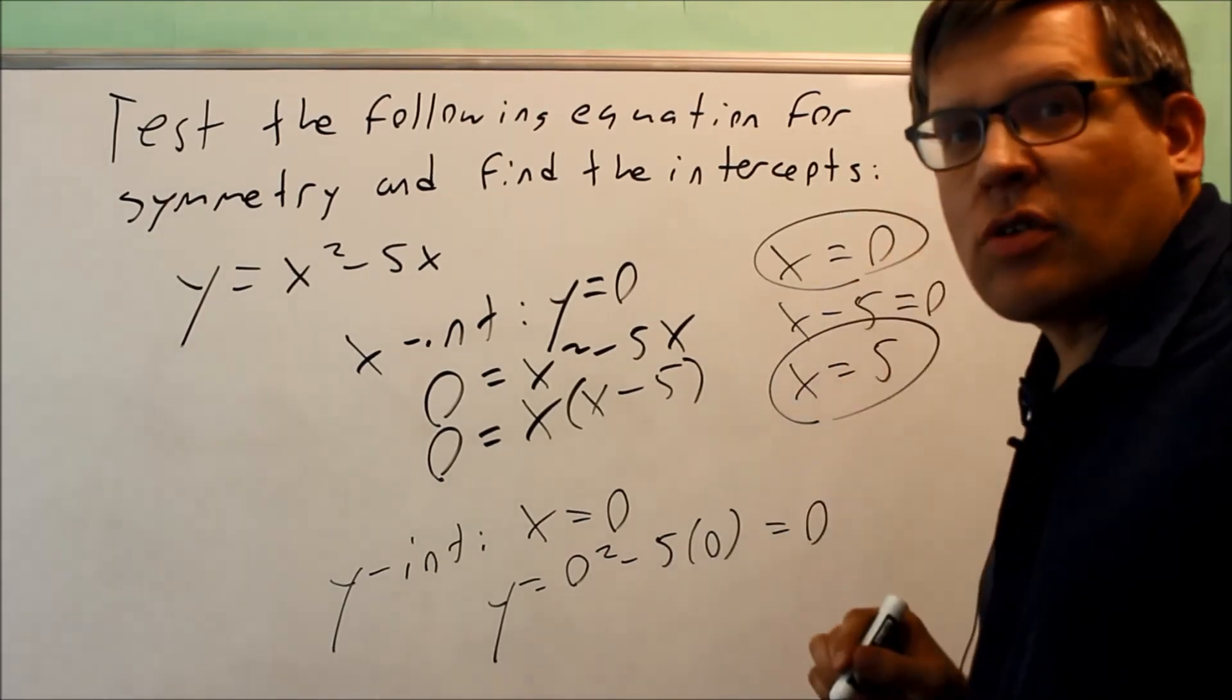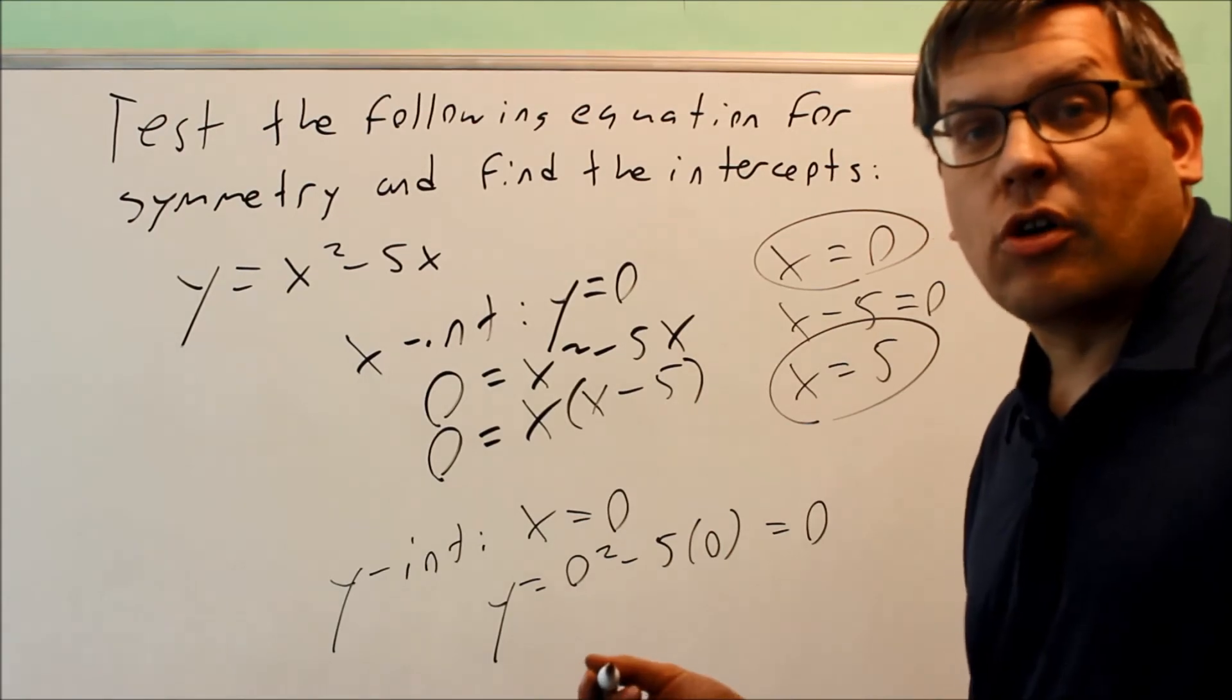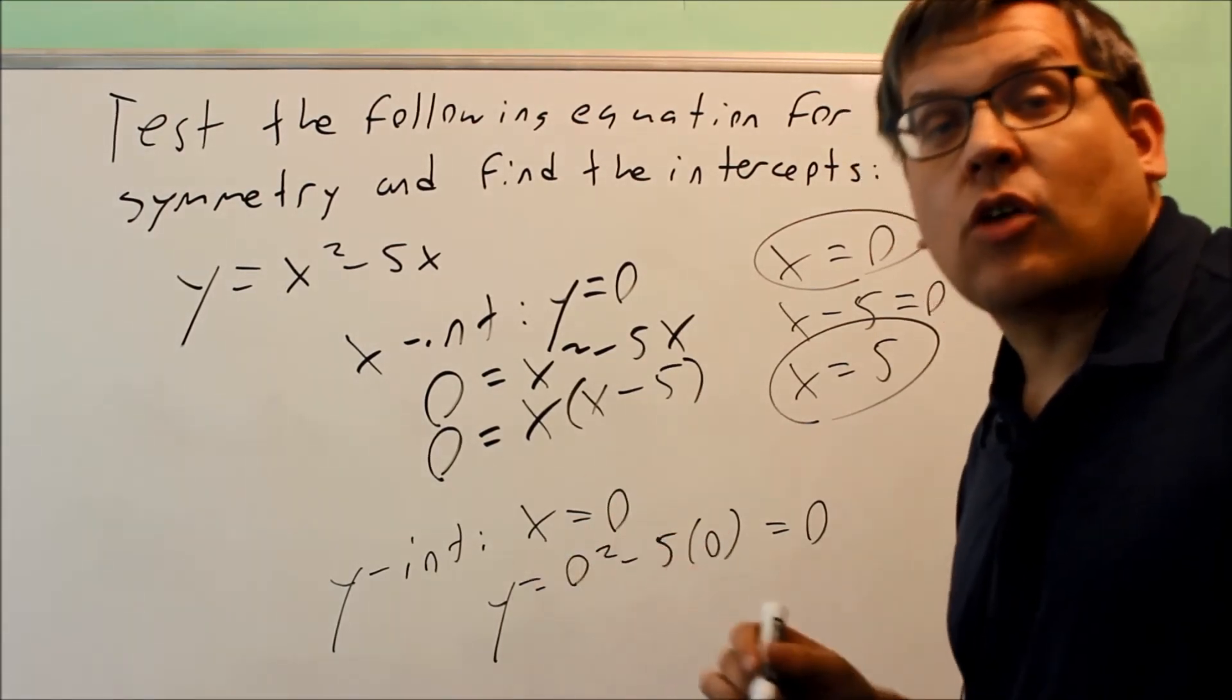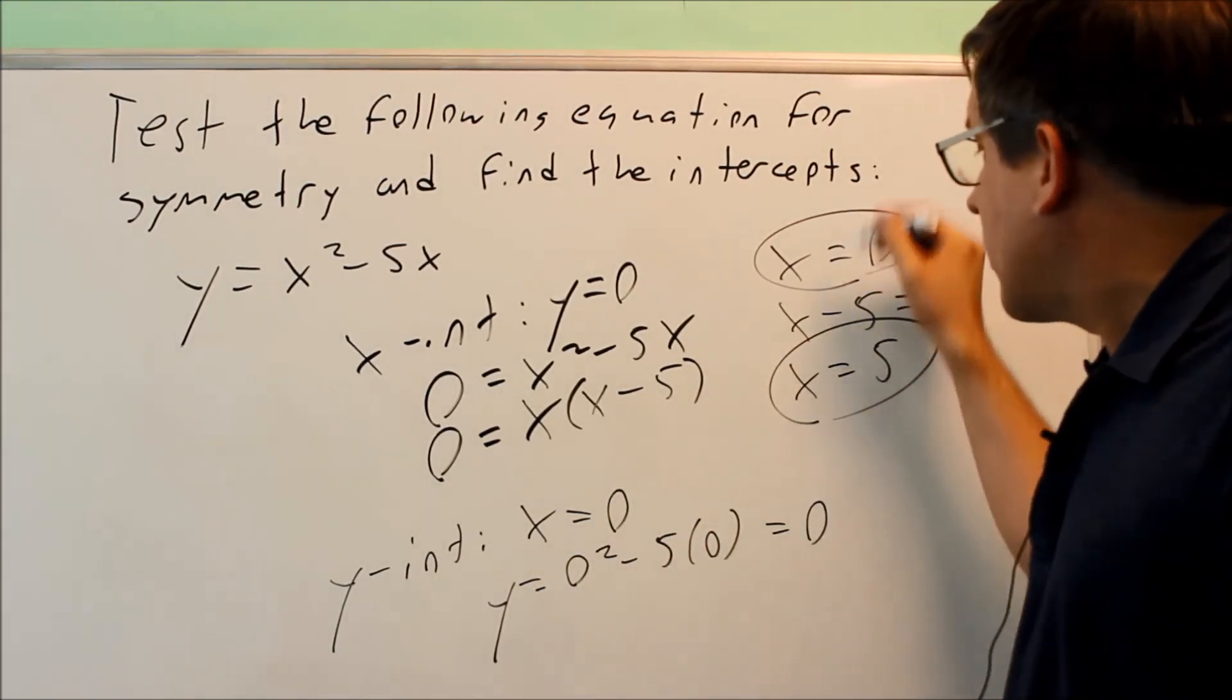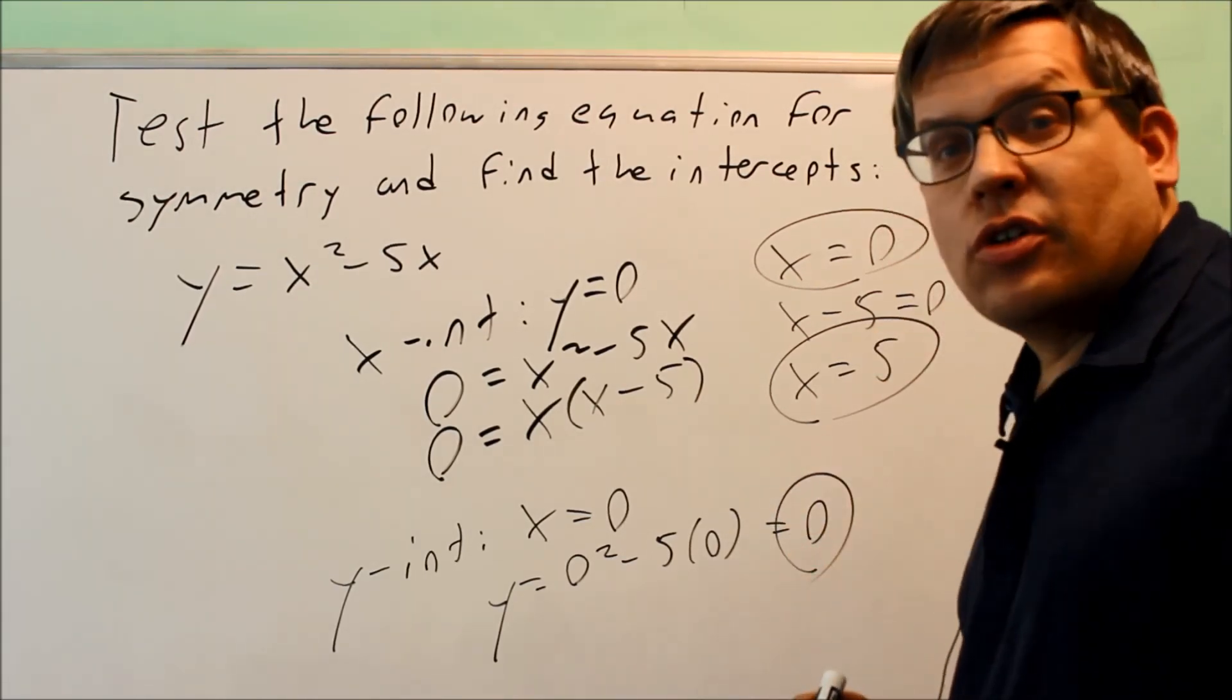This makes sense because if one x-intercept is zero, the y-intercept will also be zero, since the graph goes through the origin (0, 0). Therefore, the x-intercepts are 0 and 5, and the y-intercept is 0.